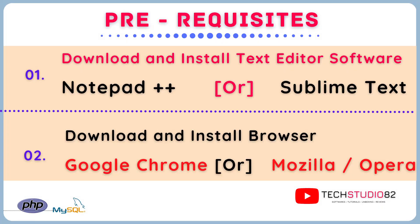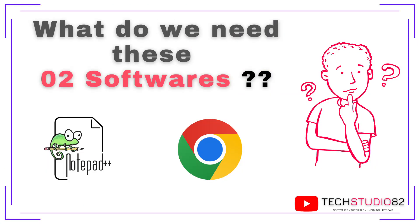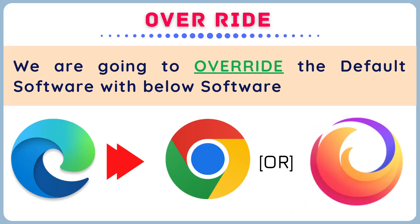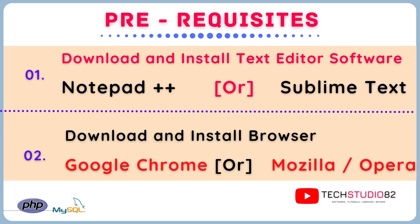Before moving on to the WAMP server installation, there are some prerequisites. First, please install Notepad++ or Sublime text editor software, whichever you are familiar with for writing code. Second, please install Google Chrome, Mozilla Firefox, Opera, or any other web browser of your choice. At the time of WAMP server installation, the setup wizard will prompt you whether to override the default Notepad text editor and Internet Explorer with your preferred software. For this reason, we need these two softwares.